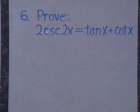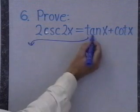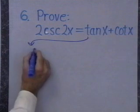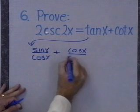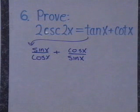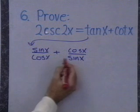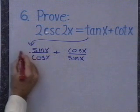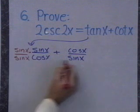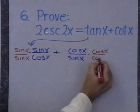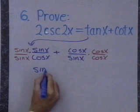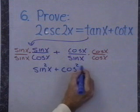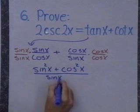Let's look at one last problem — an identity. I want to prove that 2csc(2x) = tan(x) + cot(x). I'm going to start with the more complicated side. tan(x) + cot(x) — I'll write everything in terms of sine and cosine: sin(x)/cos(x) + cos(x)/sin(x). I have two fractions to add, so I need a least common denominator. The LCD is sin(x)cos(x). I multiply the first fraction by sin(x)/sin(x) and the second by cos(x)/cos(x).